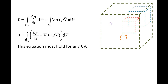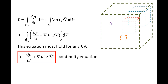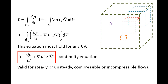This includes if the control volume encompasses an infinitesimally small region of space. The only way this is possible is if the integrand itself is equal to zero. If the integrand were non-zero in a certain region, we could simply form a control volume around that region to obtain a non-zero value for the integral. We now have the continuity equation, which is the conservation of mass equation for an infinitesimally small region of space. It is valid for all points in space for steady and unsteady flows, compressible and incompressible flows.